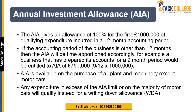First of all, the Annual Investment Allowance (AIA) is available at 100% for the first £1 million of qualifying expenditure in a 12-month accounting period. This means that if a business spends £1 million or more on capital expenditure, then for the first £1 million, you can get an immediate allowance in the name of AIA. This £1 million limit is for a 12-month accounting period.